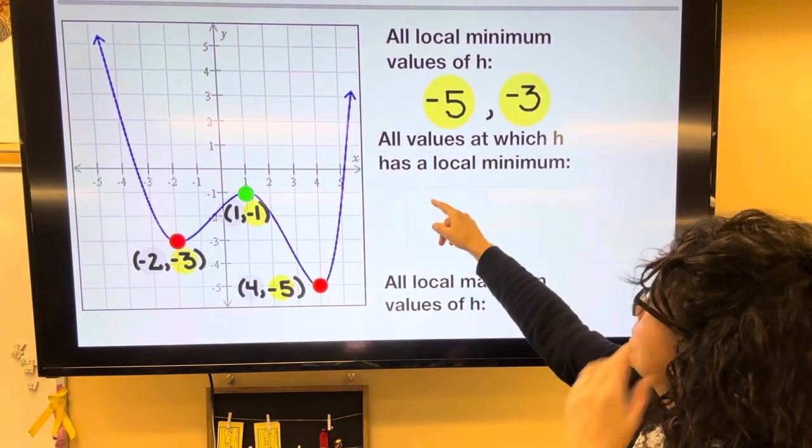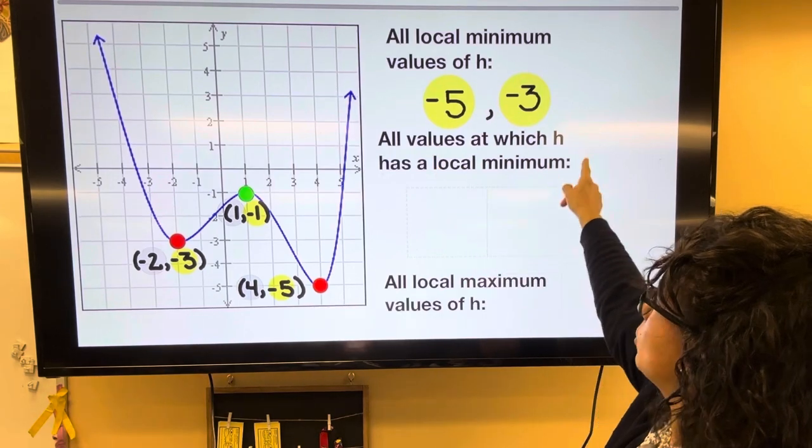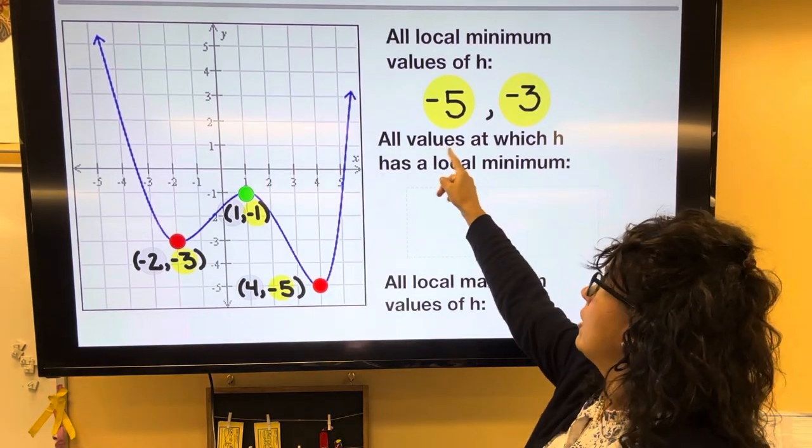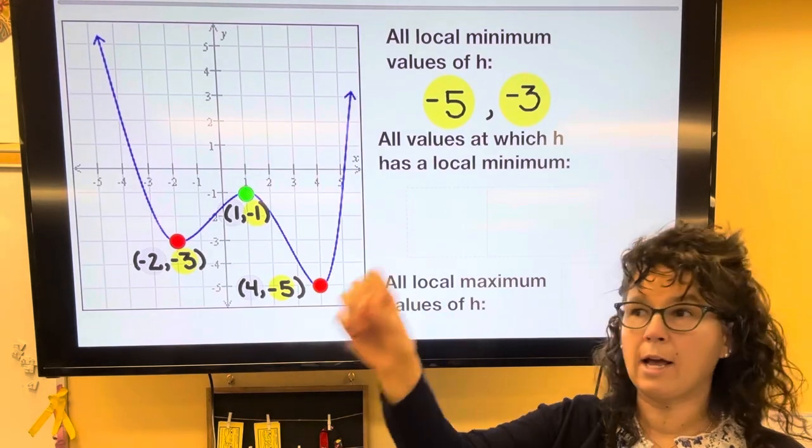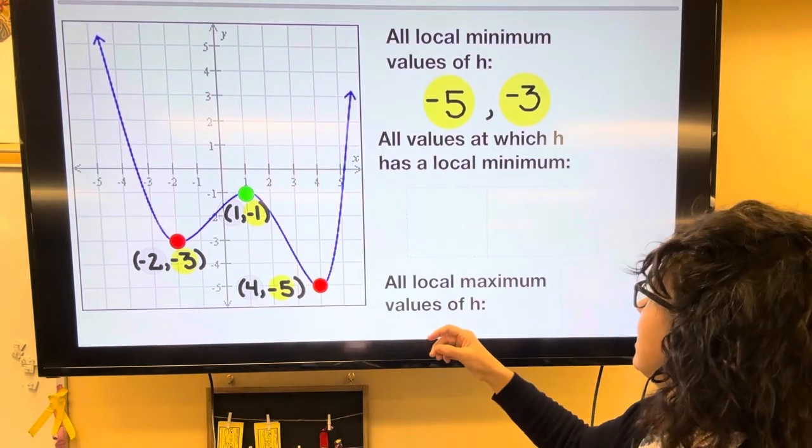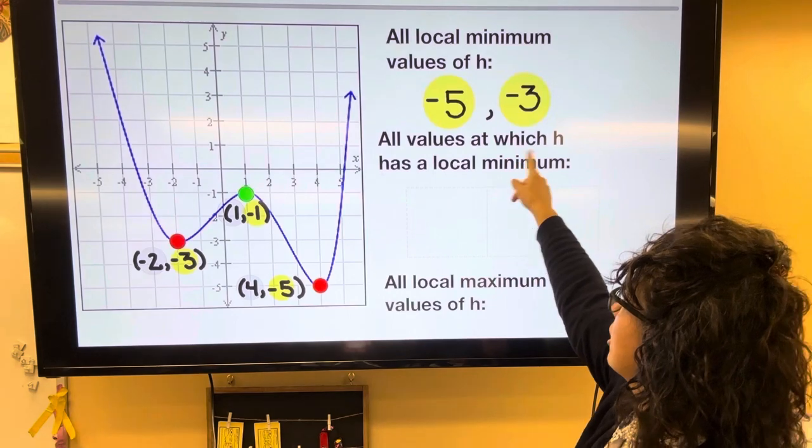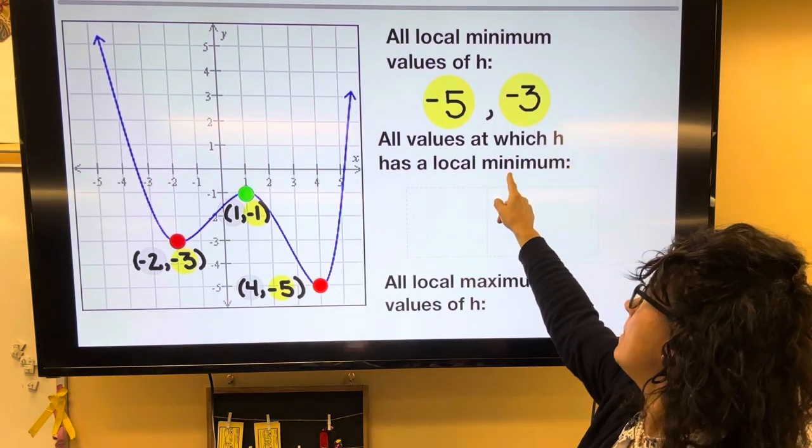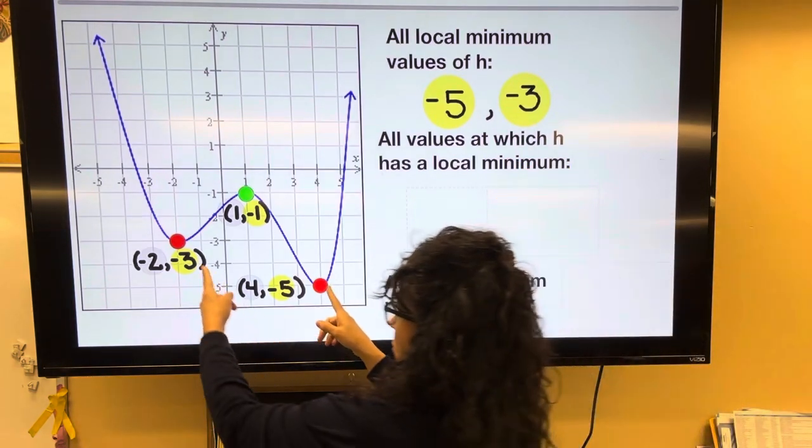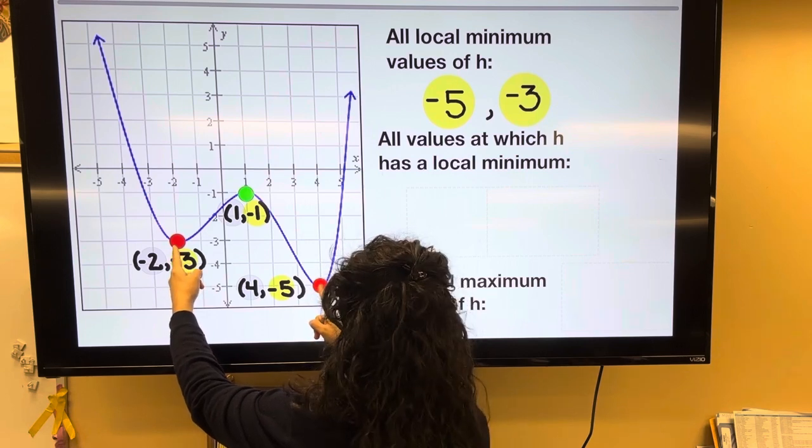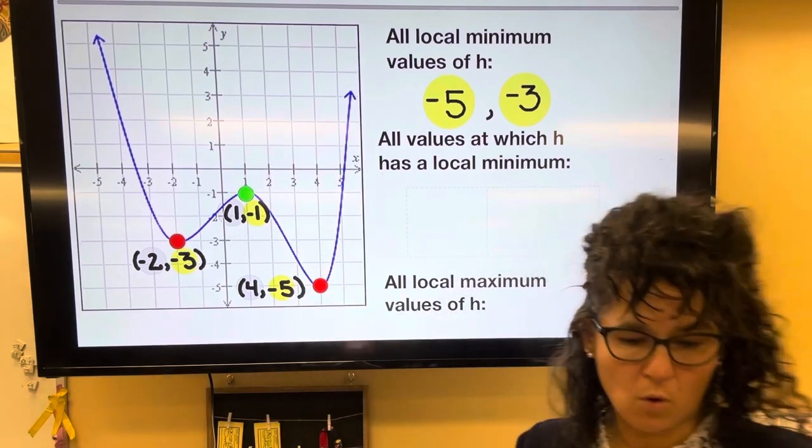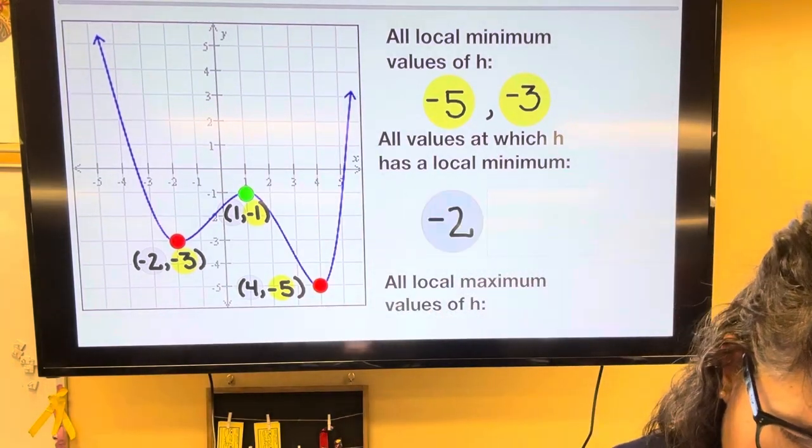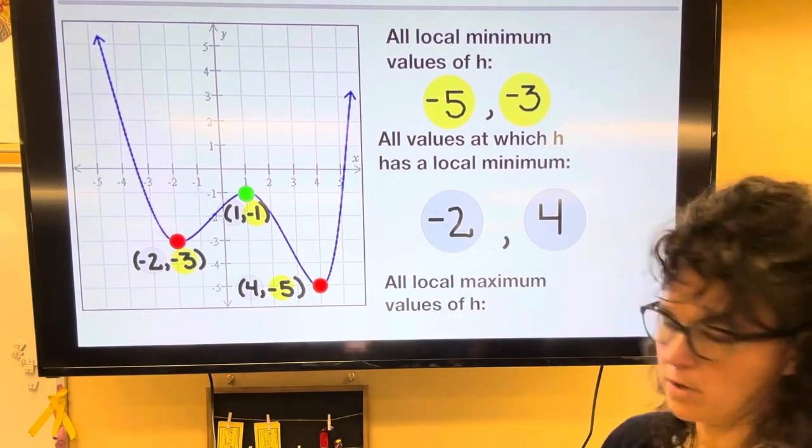And then this one right here, all values at which, so values at which is what X's are causing. At what X values is it happening? So my answers are going to be X values of the minimums. So again, both of these are minimums. And so the X values are negative 2 and 4. So we've got those two answers.